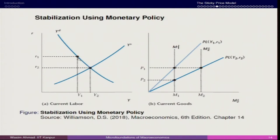The ideal situation should be equilibrium at R2, but let us assume that the economy is operating at R1, corresponding to Y1. This means aggregate demand and aggregate supply are not the same — aggregate demand is lesser than aggregate supply. At price P1, you have the demand for money P·L(Y1, R1) and the supply of money M1. At price P1, the money market clears.